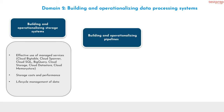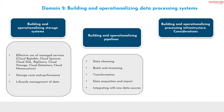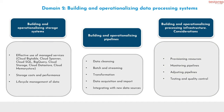Number 2, building and operationalizing pipelines. It contains 5 subtopics: first, data cleansing; second, batch and streaming; third, transformation; fourth, data acquisition and import; fifth, integrating with new data sources. Number 3, building and operationalizing processing infrastructure considerations. It contains subtopics: first, provisioning resources; second, monitoring pipelines; third, adjusting pipelines; fourth, testing and quality control.